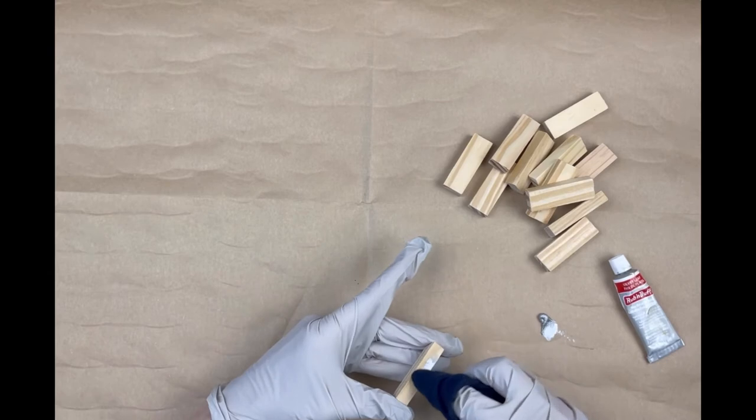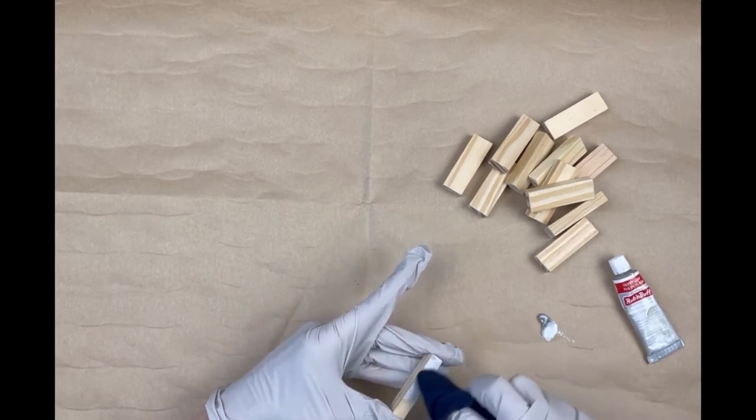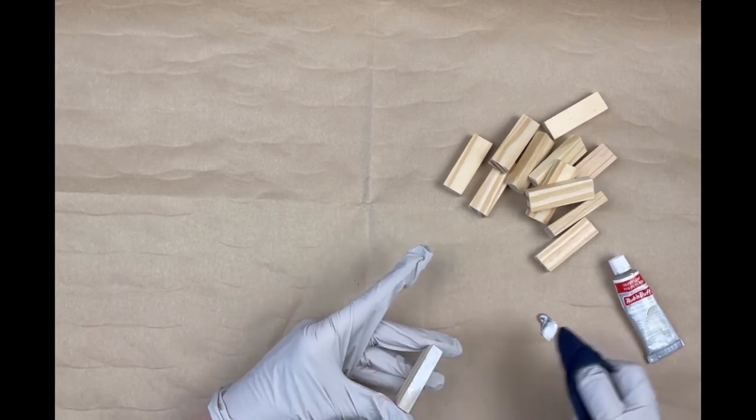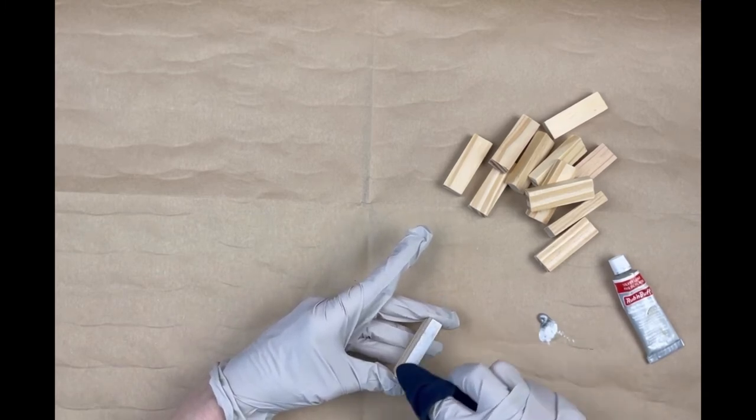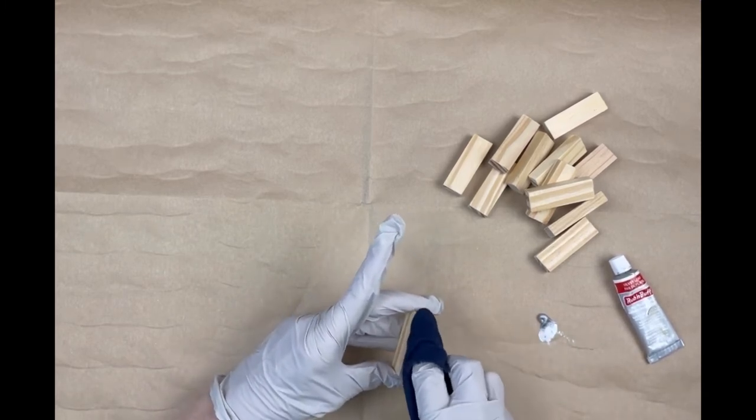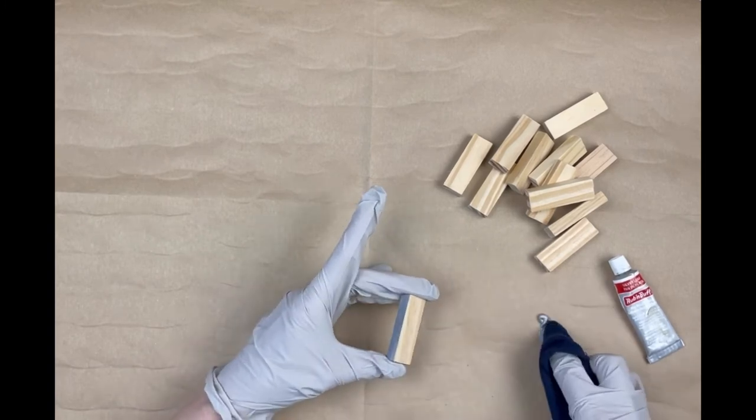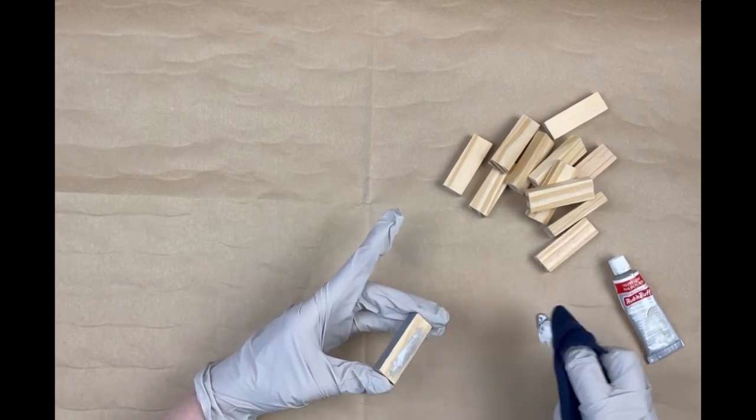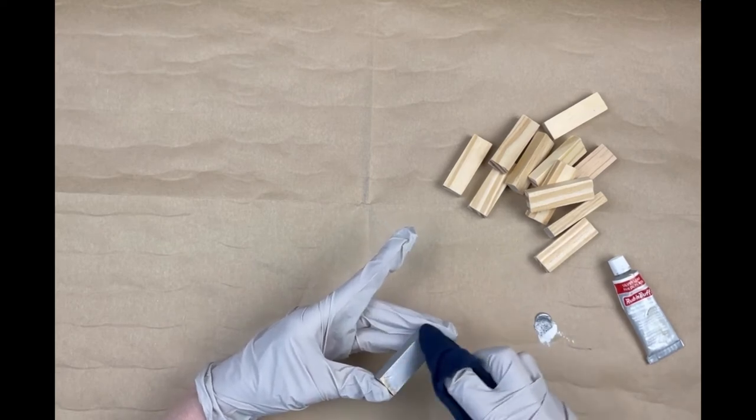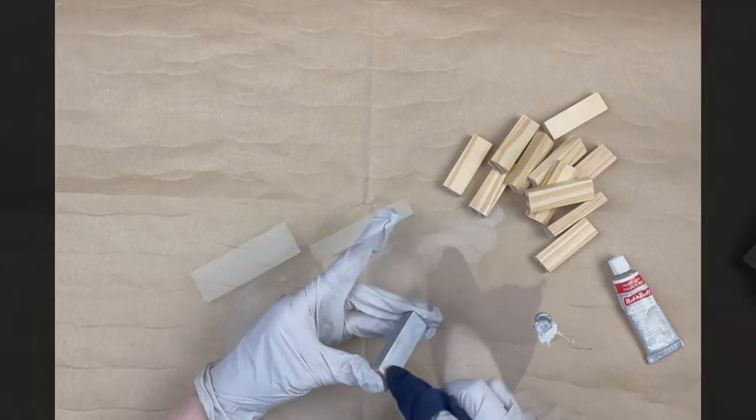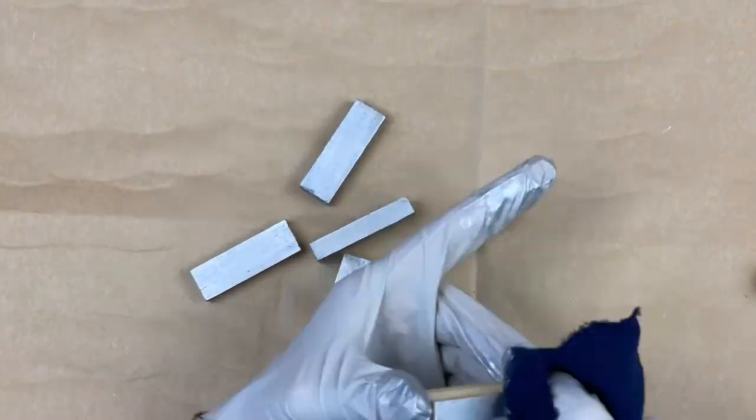Using a piece of an old t-shirt, apply the Rub and Buff to all sides of the blocks, except for one of the long skinny ones. That's what's going to be up against the wall. The command adhesive won't stick to the Rub and Buff. I found that out the hard way. As you'll see, I painted all possible edges and had to go back and do everything over again.